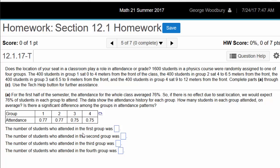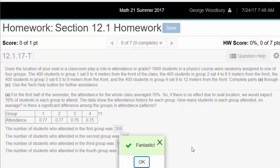The first question asked the number of students who attended in the first group. I'm going to multiply 400 by its percent 77%, and 400 times 0.77 is 308. For group 2 that's the same. For group 3, 400 times 75% is 300 and the same for group 4. Check my answer. Fantastic.